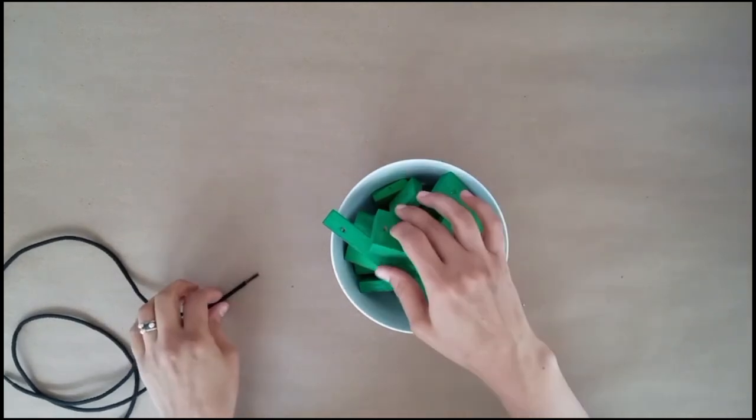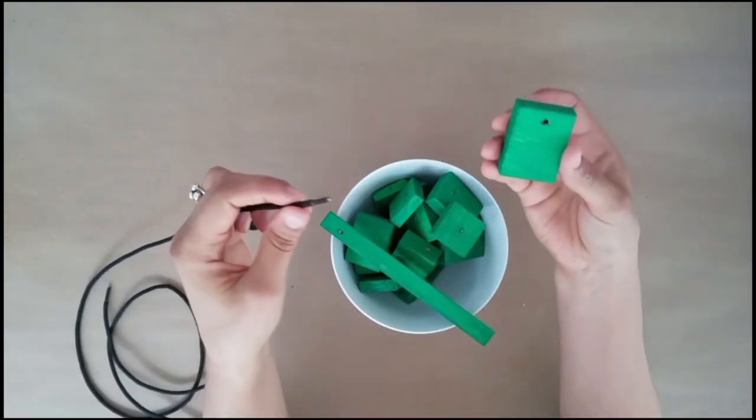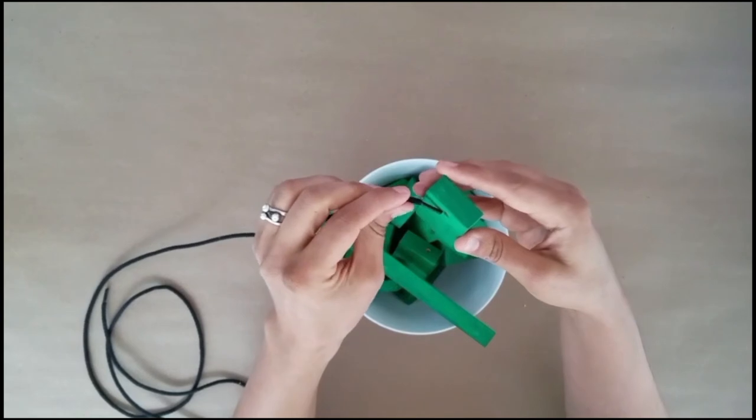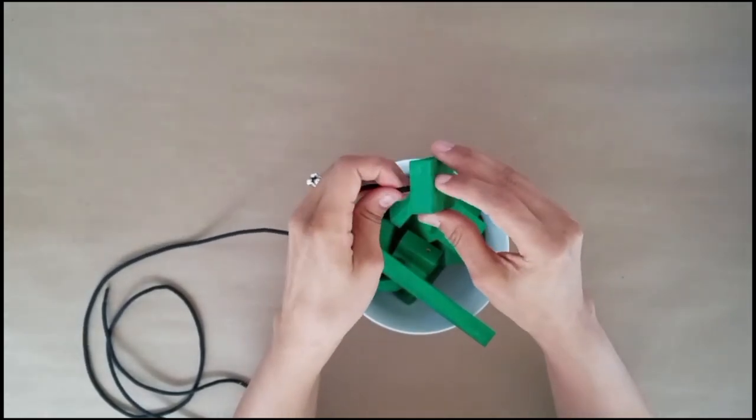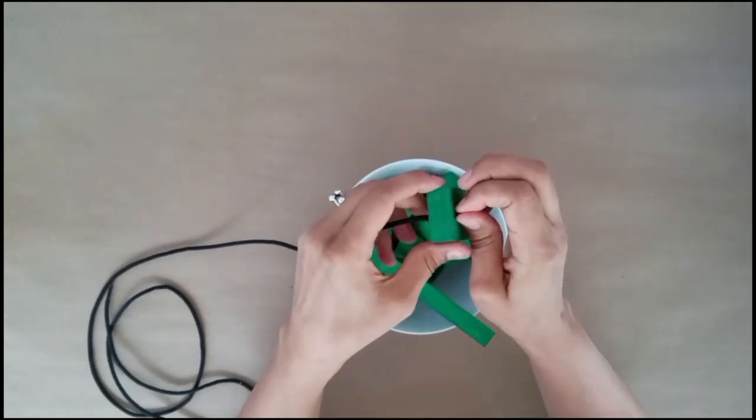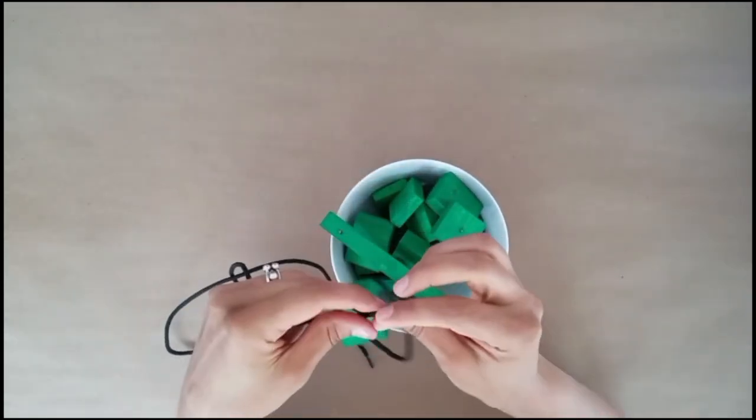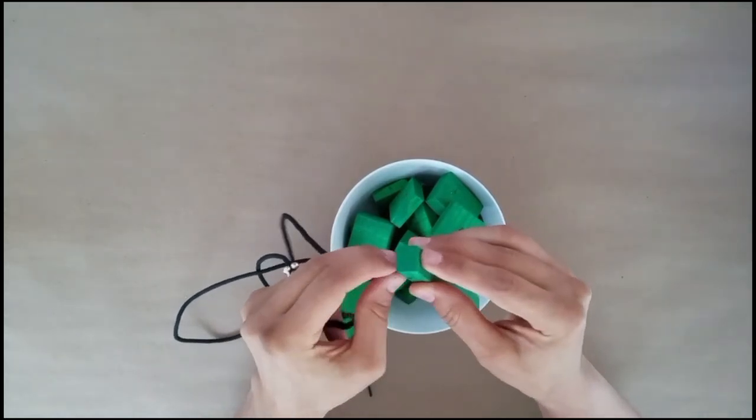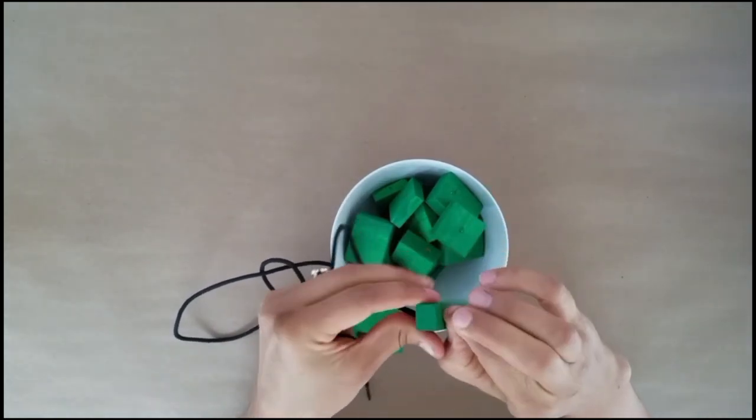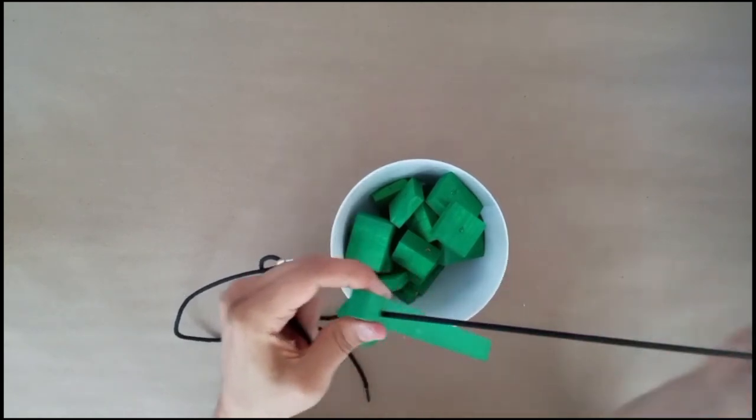Step four is to thread your wood onto your necklace. If you can find a string that matches the color of the wood, this will help you achieve more of the monochromatic effect. So you can play around with the different shapes and sizes, alternating however you'd like.